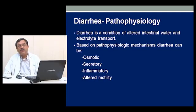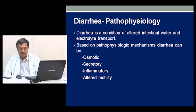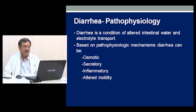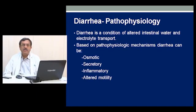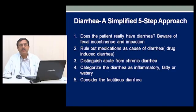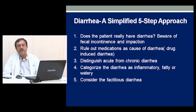Either a decrease in absorption or increase in secretion will lead to diarrhea. Based on the pathophysiology mechanism, diarrhea can be osmotic, secretory, inflammatory, or because of altered motility. I will put across to you five simplified steps by which we can come to a conclusion about the reason for the diarrhea and how to manage it. Management can always be tailored once we know the exact cause of diarrhea.